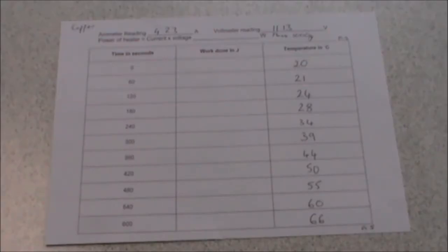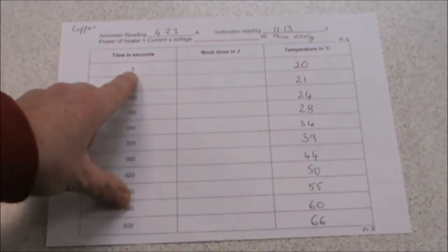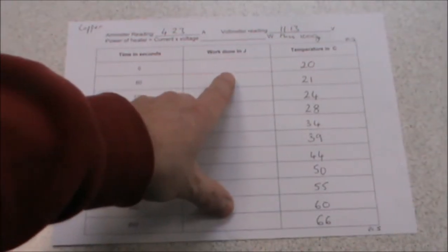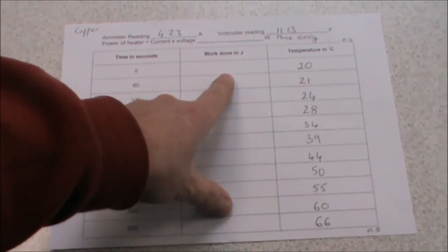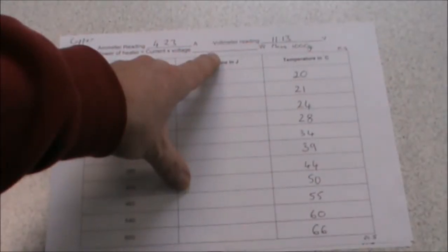The next stage is to calculate the work done in joules. To do this, we multiply the power of the heater that you have just calculated by the time in seconds. Our first one will be zero multiplied by the power, and as anything multiplied by zero is zero, your first result will be zero. You now need to calculate the rest of the work done by multiplying the power by each of these times in turn.